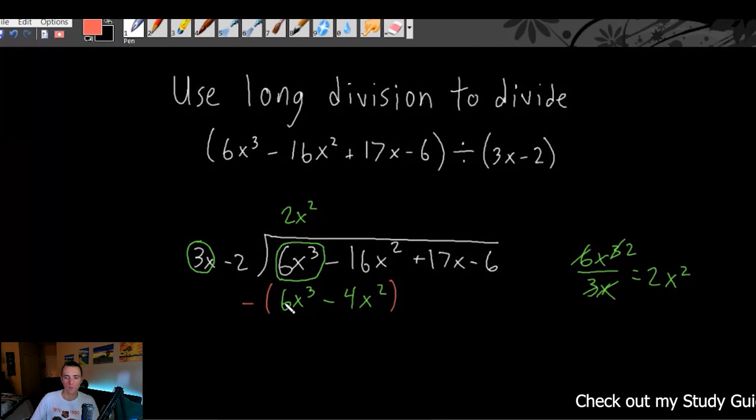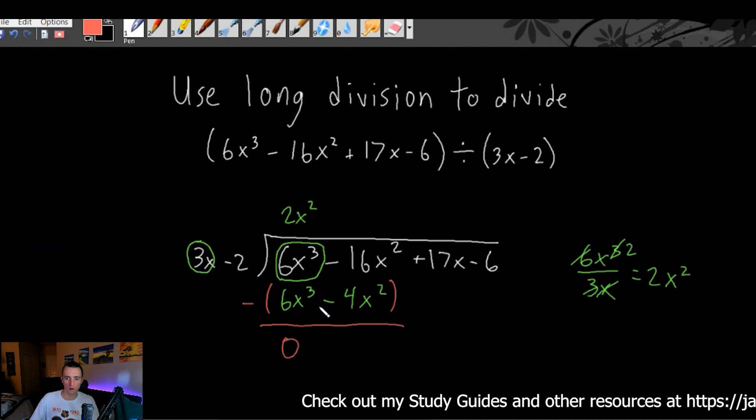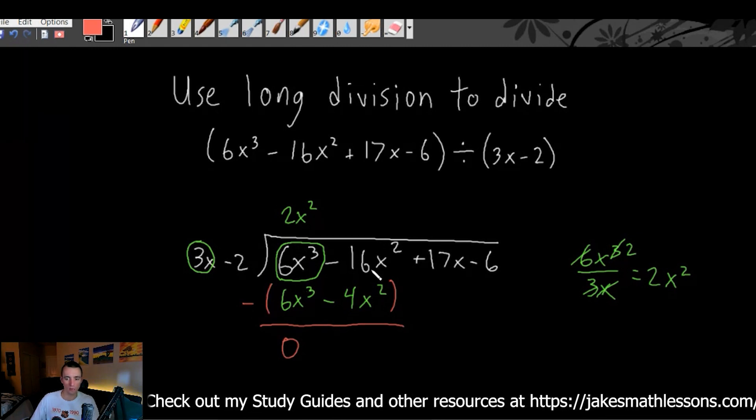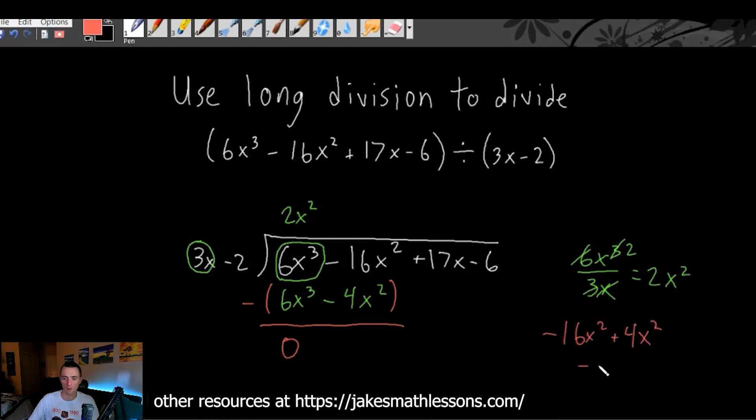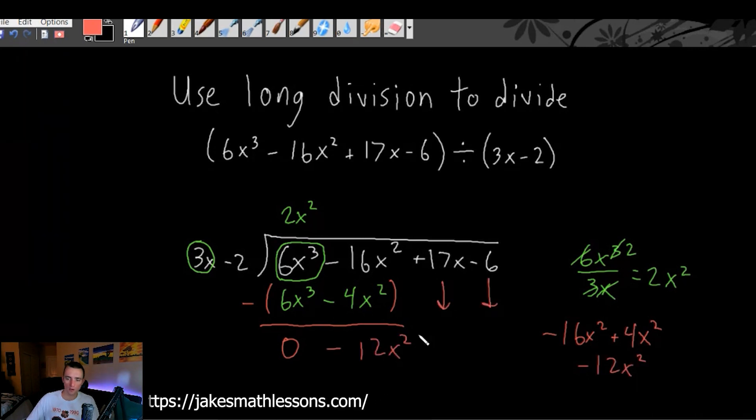Then we subtract this whole thing in parentheses from the polynomial that we had up here. So 6x cubed minus 6x cubed gives us 0. Negative 16x squared minus negative, so minus negative is going to turn into a plus. So negative 16x squared plus 4x squared is going to turn to negative 12x squared. Then you just carry down both of these terms here. So plus 17x minus 6.